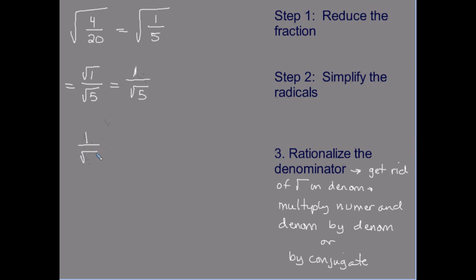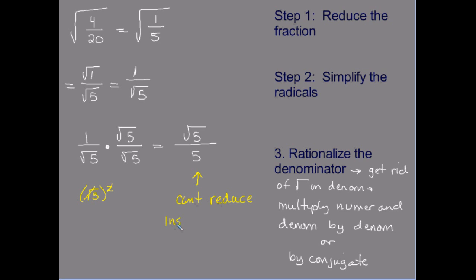I have one over the square root of five. Since I can't have the square root of five in the denominator, I multiply the numerator and the denominator by the square root of five. This gives me the square root of five over — taking the square root of five times itself, the square root and the square cancel each other out. Whenever you multiply a radical by itself, the radical goes away. Important: you cannot reduce inside and outside of a radical. This five is under a radical and this five is not, so this does not reduce. This is my final, most simplified answer.